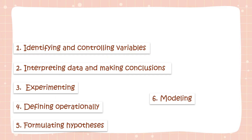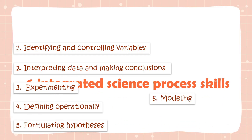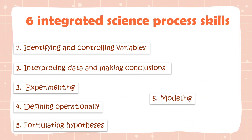Now class, let's go to the six integrated science process skills. Number one: identifying and controlling variables. Number two: interpreting data and making conclusions. Number three: experimenting. Number four: defining operationally. Number five: formulating hypothesis. And the last number six: modeling.